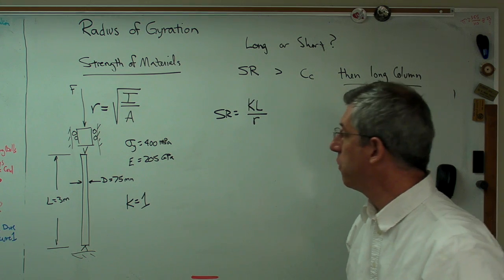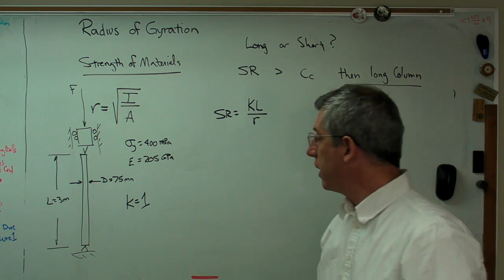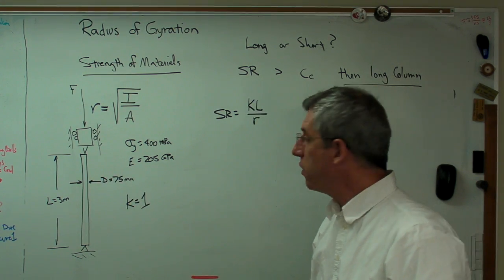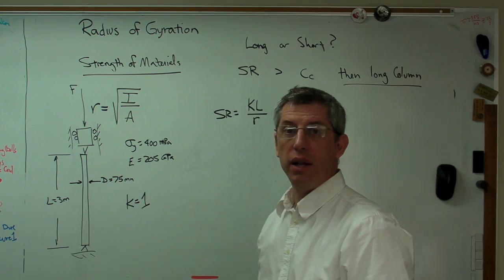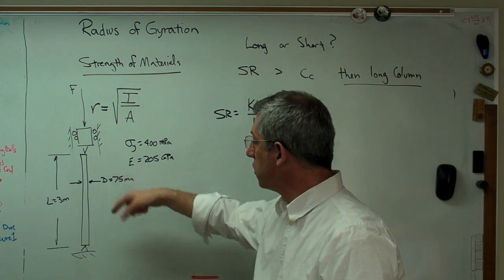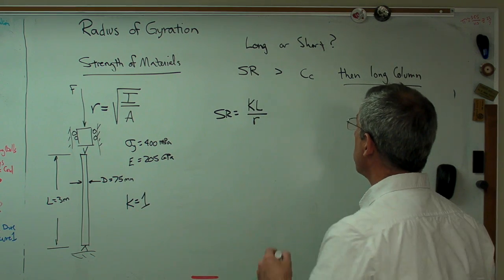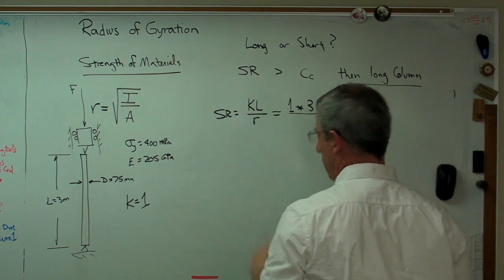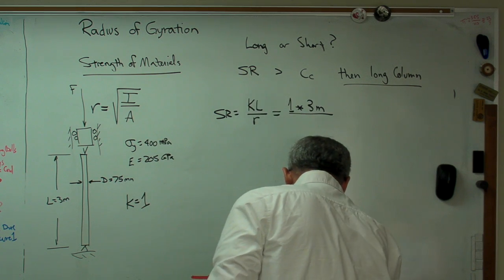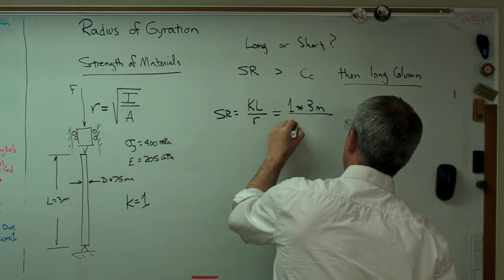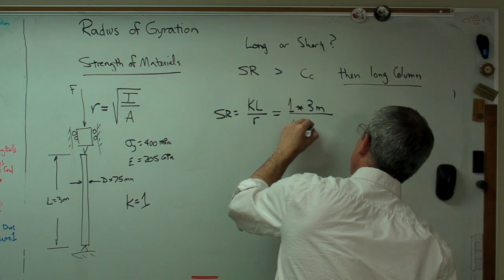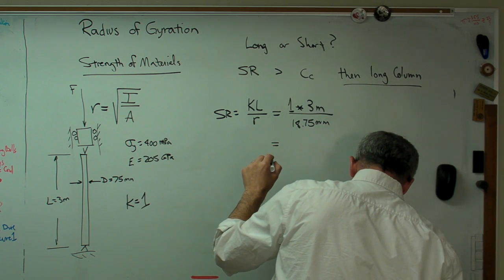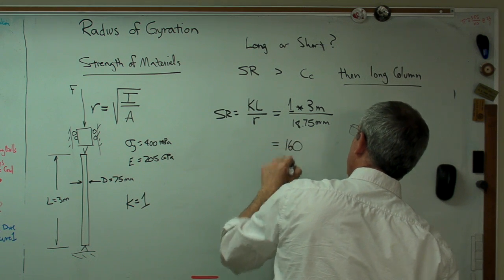For other end conditions, K is something else. And the reason it's like that is because when Euler derived these equations originally, he derived it from pinned ends. And rather than re-deriving the equation, he thought it would be easier to use the same expression with different K's for different end conditions. So this is 1 times 3 meters over R. Well, square root of I over A for this turns out to be 18.75 millimeters. And the slenderness ratio is 160. Okay. That's unitless.